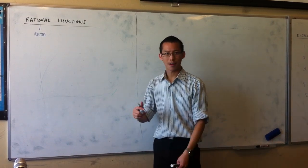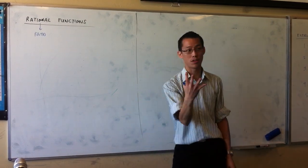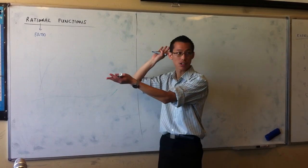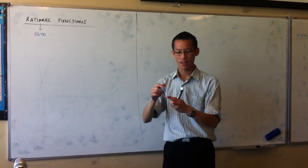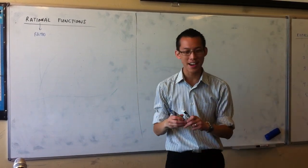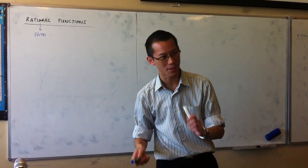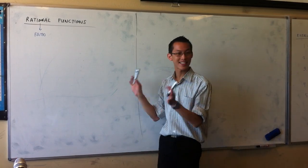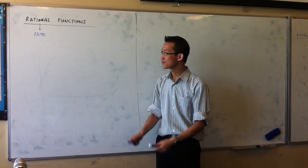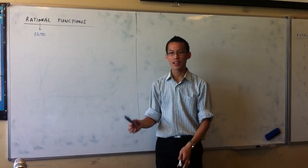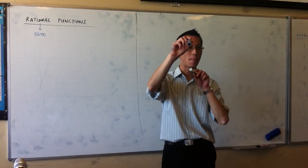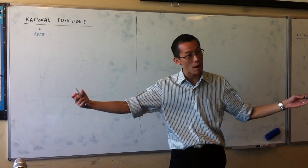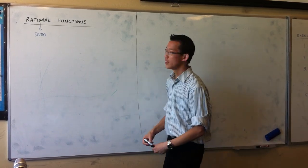I've got a four-step process to graph any rational function. I try and make corny acronyms for all my things, so we're going to get to the corny acronym soon, but first I thought I'd tell you what a couple of the harder parts of the acronym are about, and then we'll put it all together.